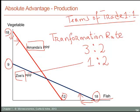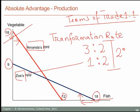Now imagine the following scenario. Amanda has decided to specialize in vegetables and is going to trade with Zoe. She knows that if she does not trade with Zoe and wants to get more fish by giving up vegetables, she has to give up three units of vegetables to get two units of fish — or, for every one unit of vegetable, she only gets two-thirds of a unit of fish in return. So if she could exchange at a rate of two units of vegetables for two units of fish, Amanda would be much better off. Rather than giving up three units of vegetables to get two units of fish, if she only had to give up two units of vegetables to get two units of fish, she would be better off.